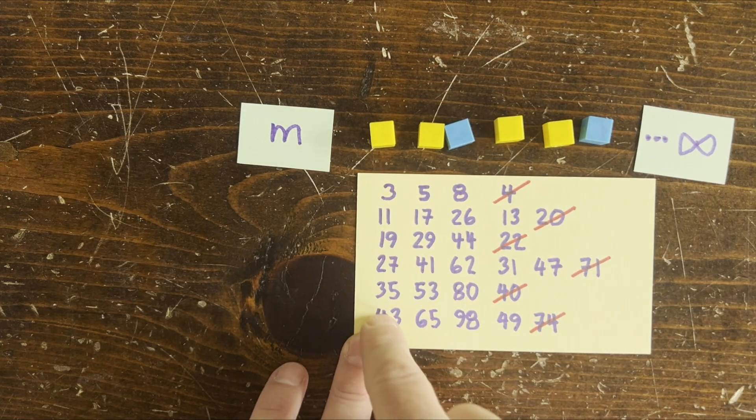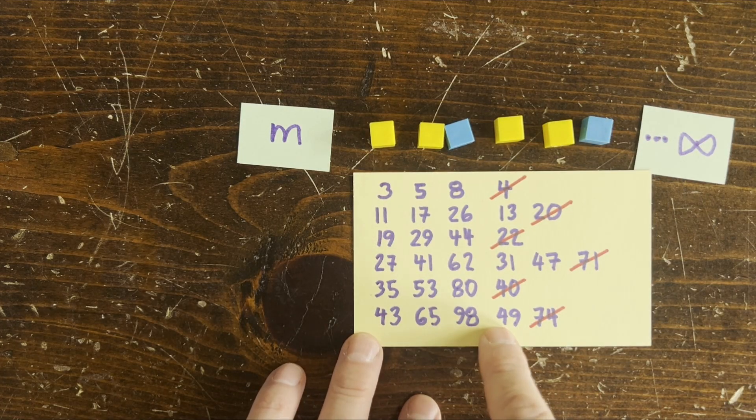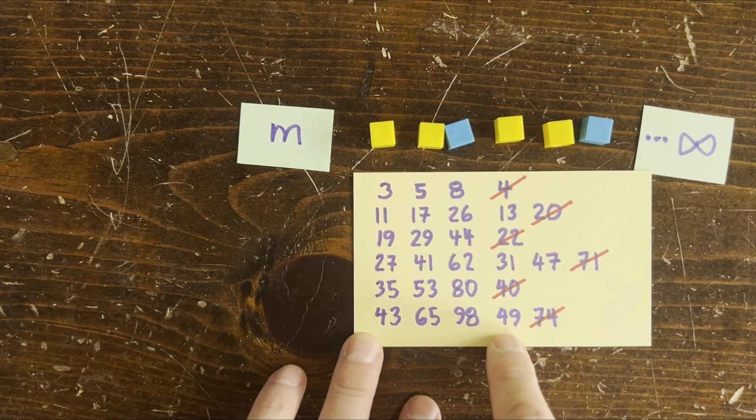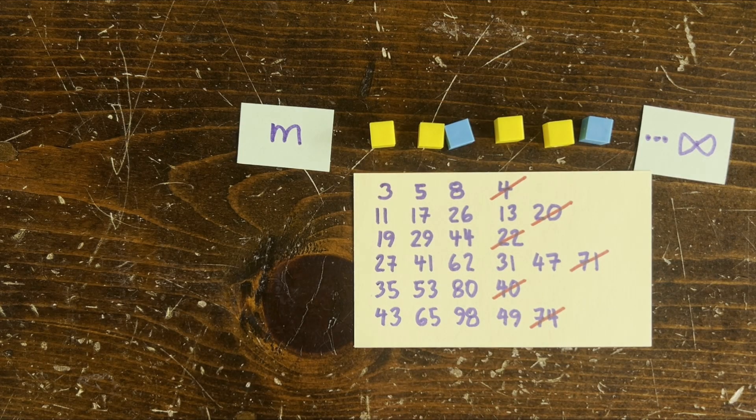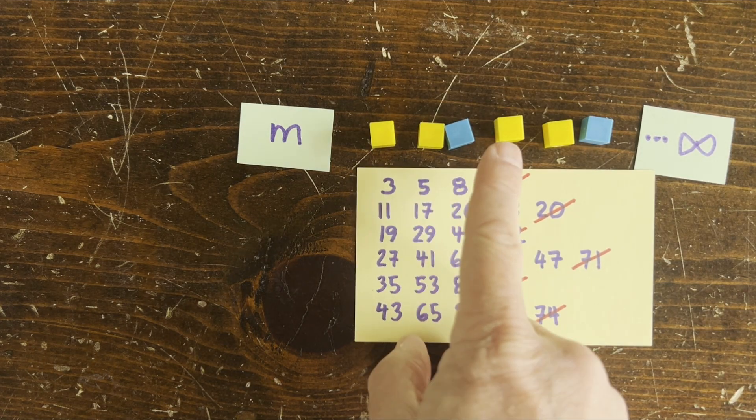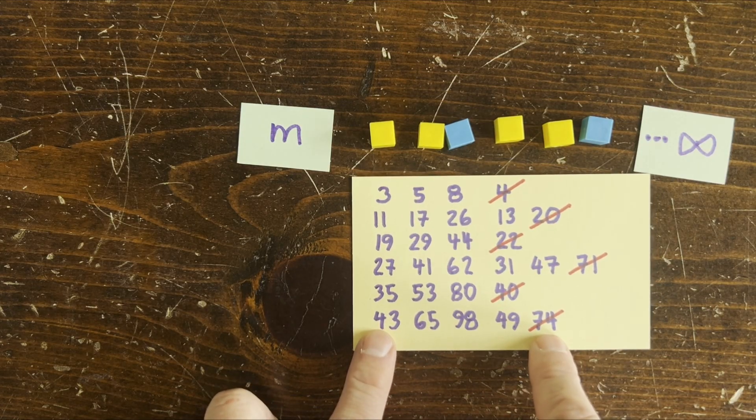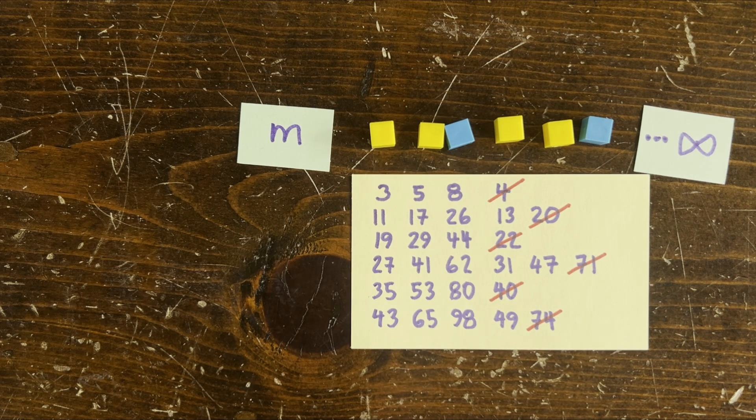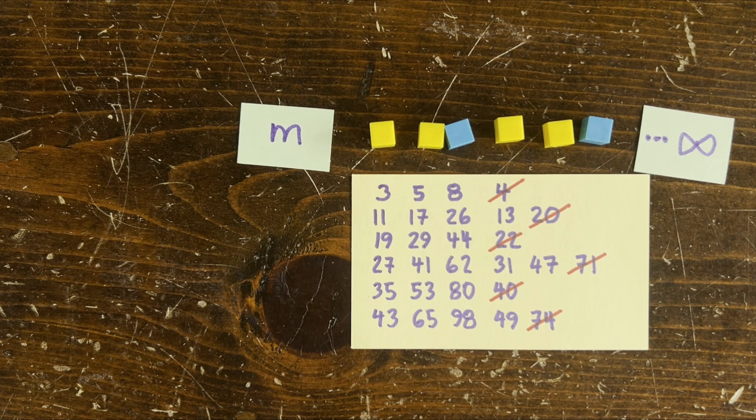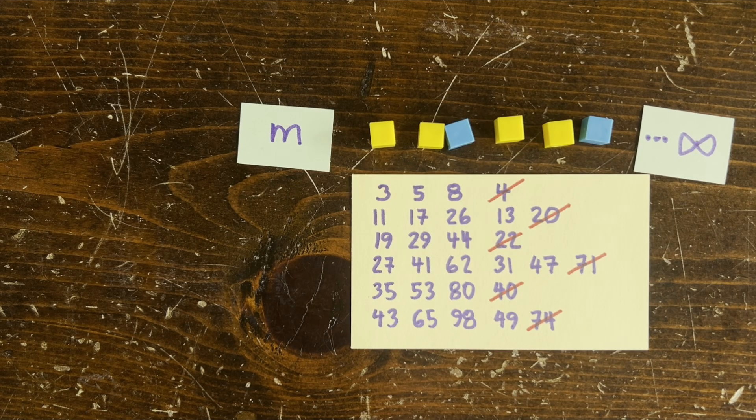But on the fourth step, every other one of these numbers fails, producing an even where we wanted an odd. And on the fifth step, every other one of the remaining numbers fails to produce an odd, and so on. No matter what number we start with, we can predict the exact step at which it won't obey our proposed trajectory.